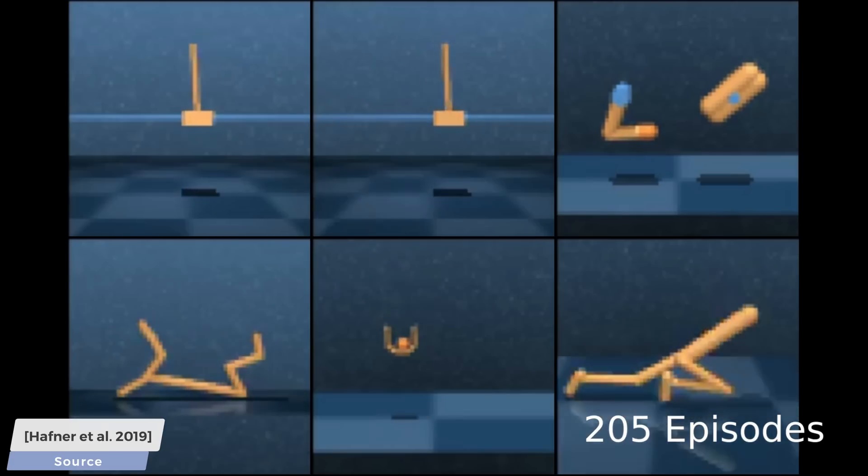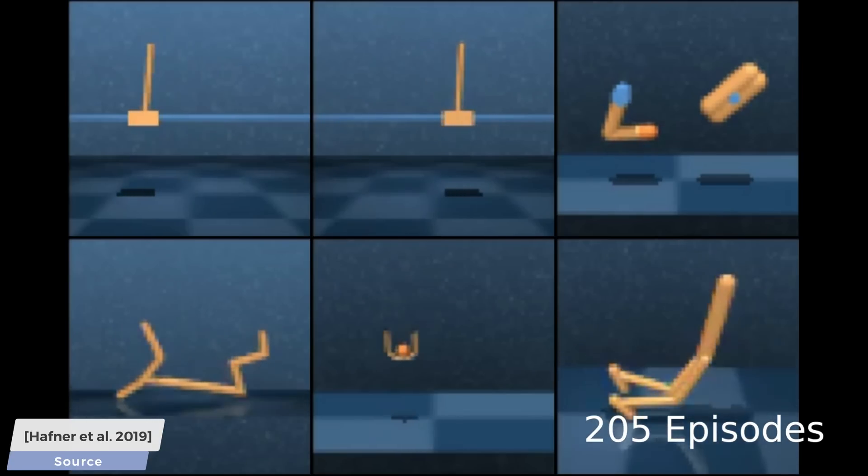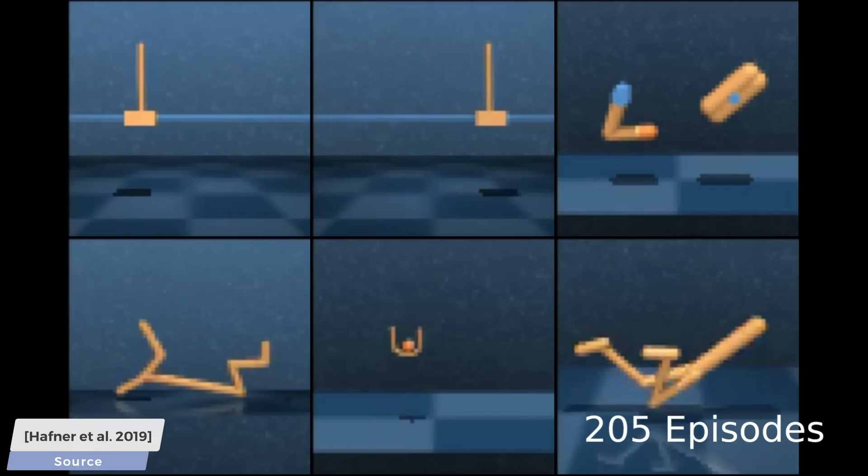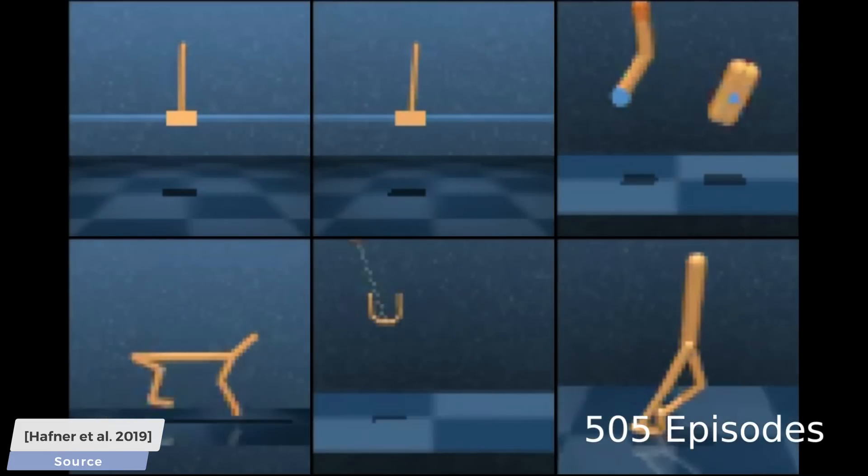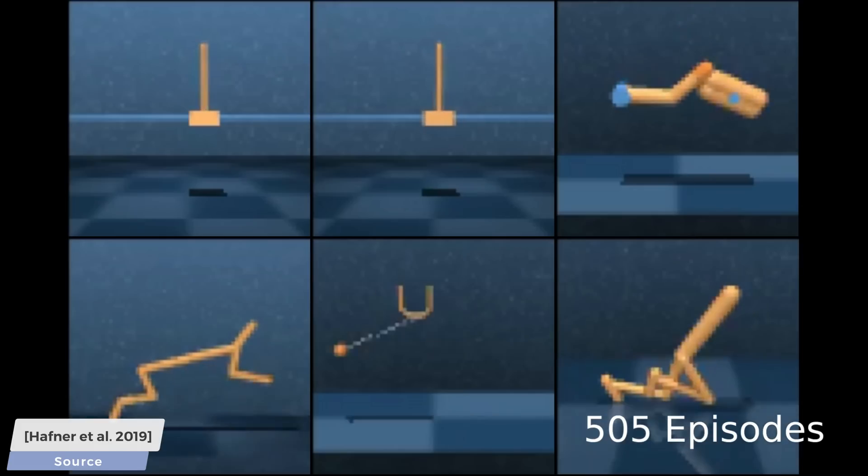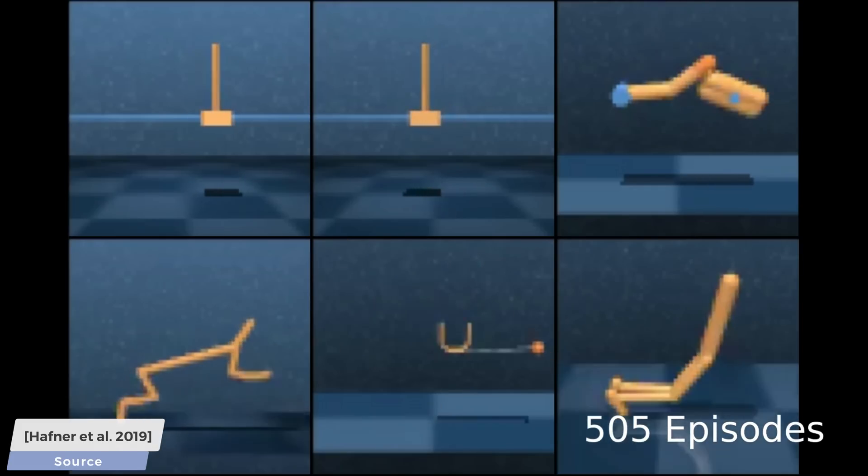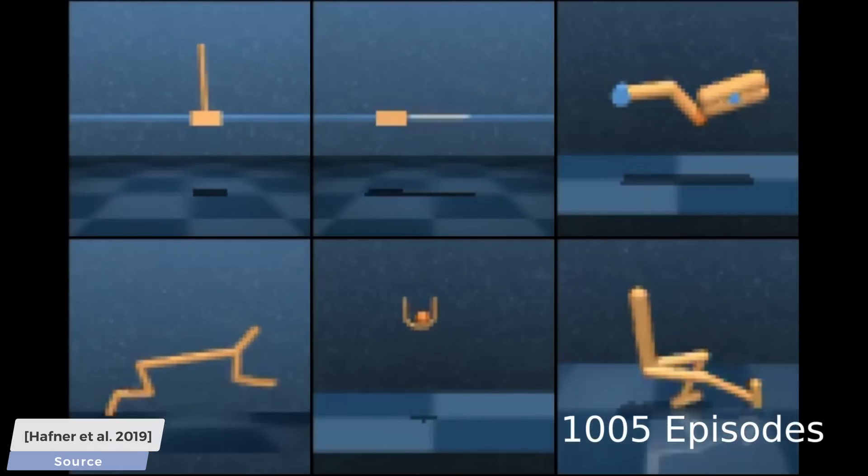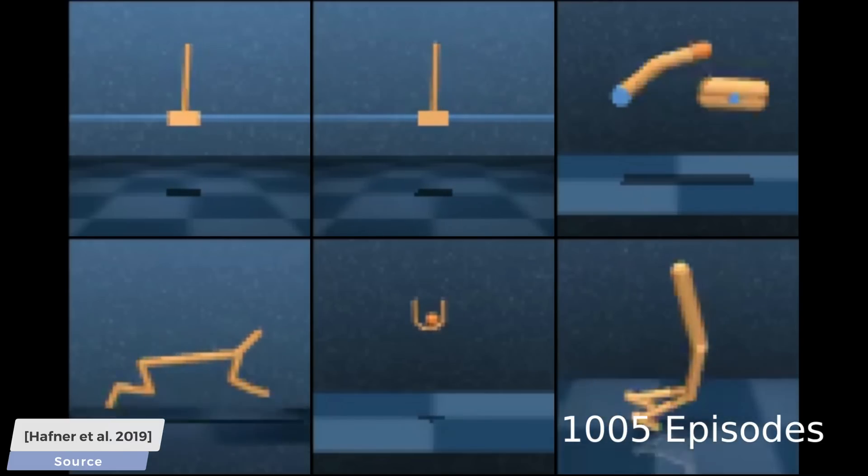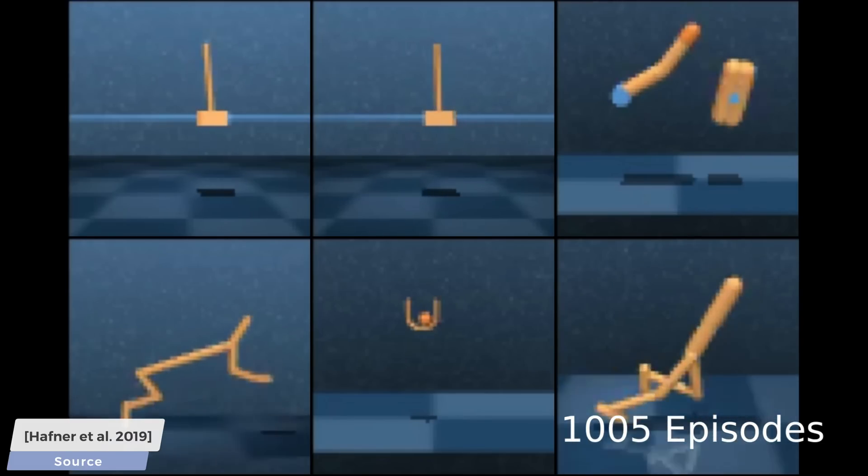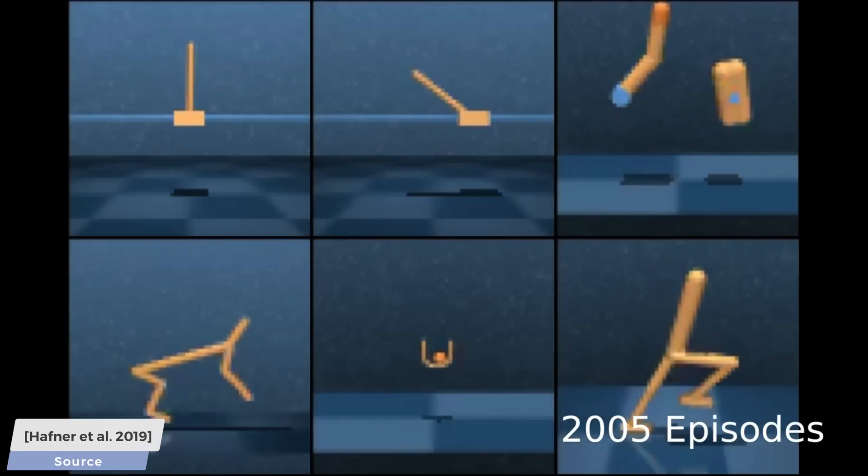A key difference with this technique against classical reinforcement learning, which is what most researchers reach out to to solve similar tasks, is that this one uses models for the planning. This means that it does not learn every new task from scratch, but after the first game, whichever it may be, it will have a rudimentary understanding of gravity and dynamics, and it will be able to reuse this knowledge in the next games.